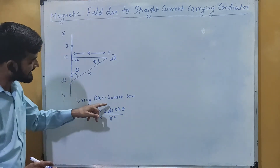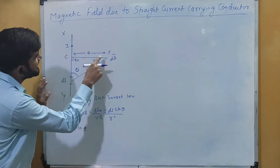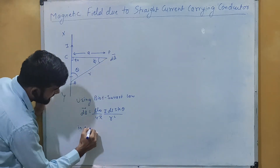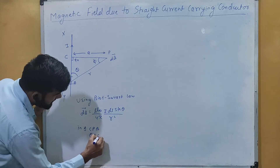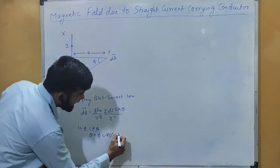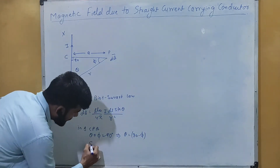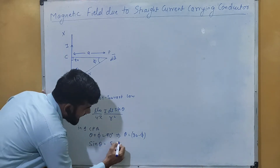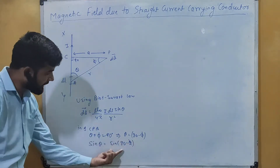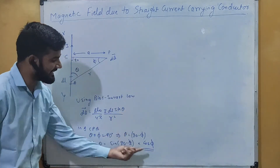Now we will replace dL sin θ and r². In triangle CPA, we have theta plus phi equals 90 degrees. So theta equals 90 minus phi. Therefore sin theta equals sin(90 minus phi), which equals cos phi. So we have expressed sin theta in terms of phi.